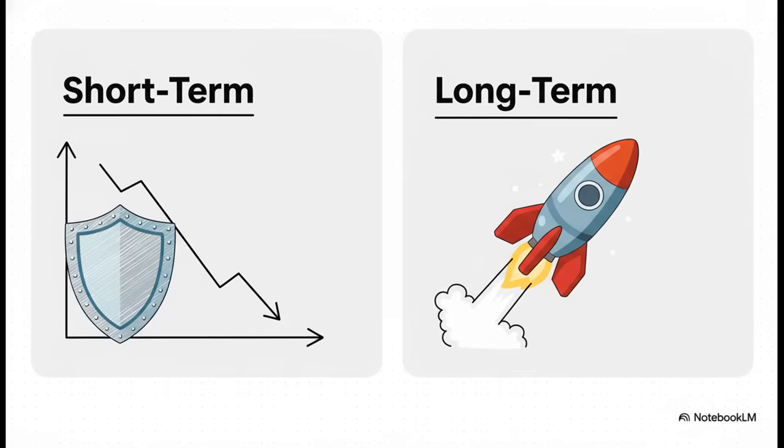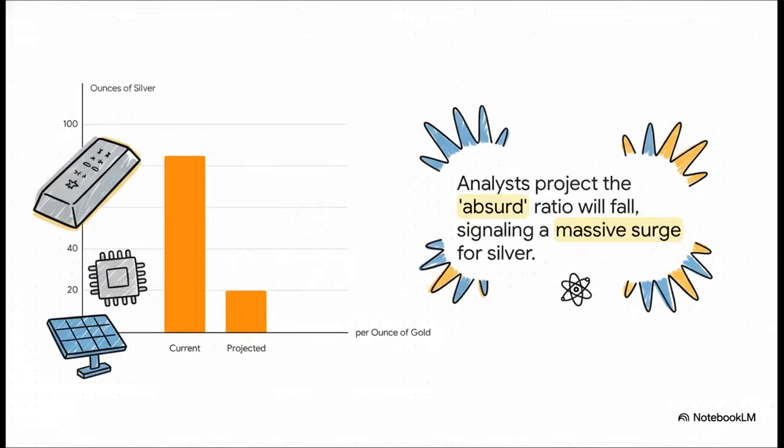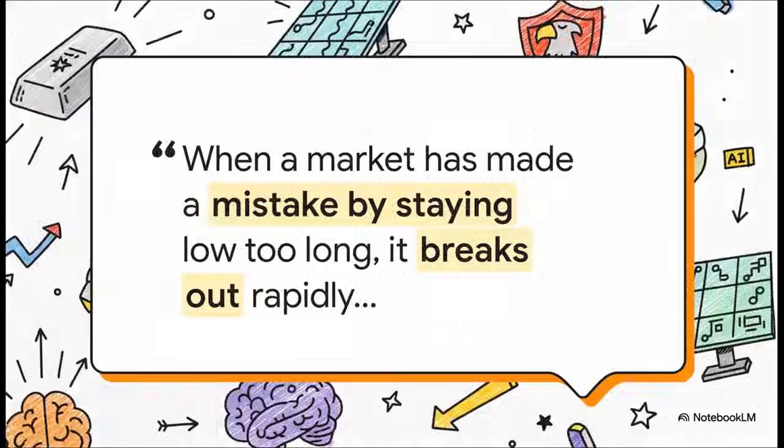And to get why, you gotta look at the gold to silver ratio. Right now, it takes about 85 ounces of silver to buy just one ounce of gold. A lot of people in the know call this ratio absolutely absurd, especially given how critical silver is to industry. They think this ratio is going to collapse, down to 20 to 1, maybe even lower. And if that happens, it means a massive price explosion for silver. The whole argument here is that the market has made a huge, fundamental mistake by keeping silver's price so low for so long. And when markets finally get around to correcting these kinds of long-term mistakes, the change isn't slow or gentle. It's fast and it is powerful.